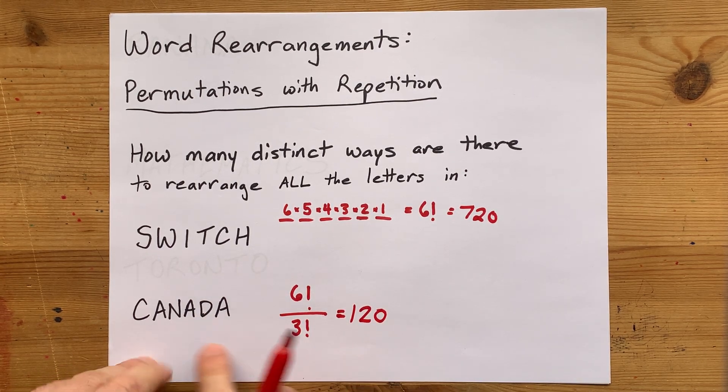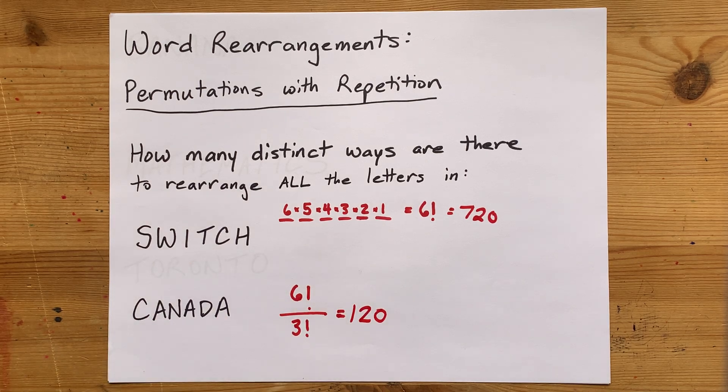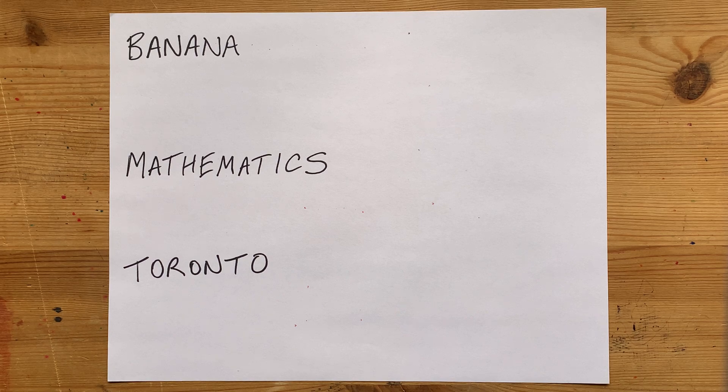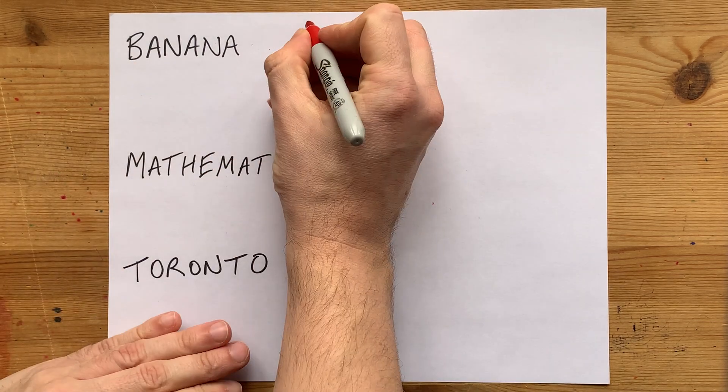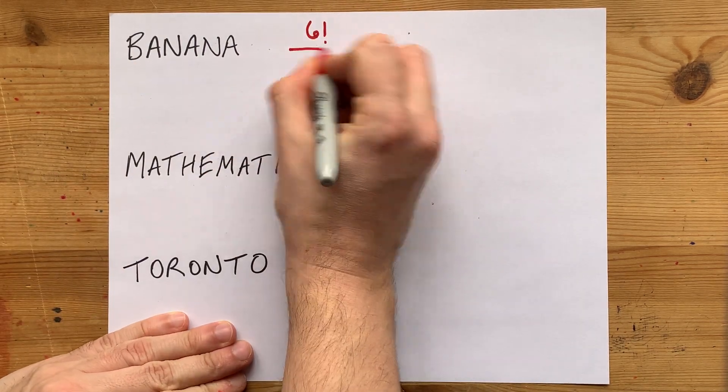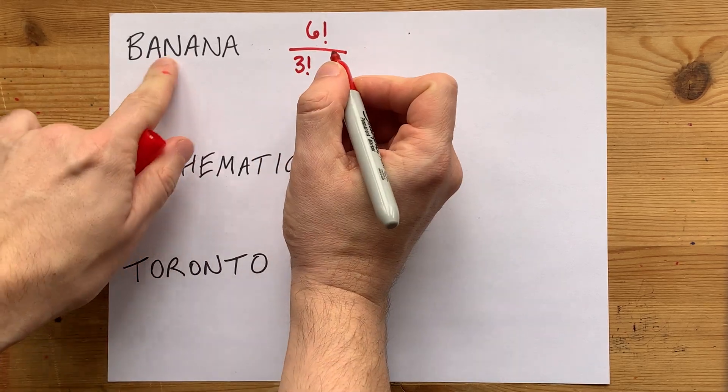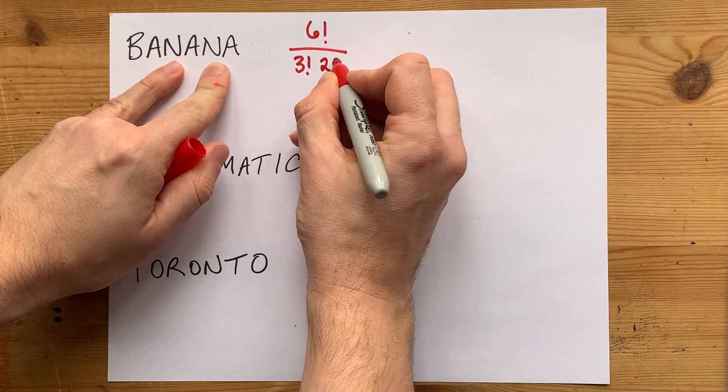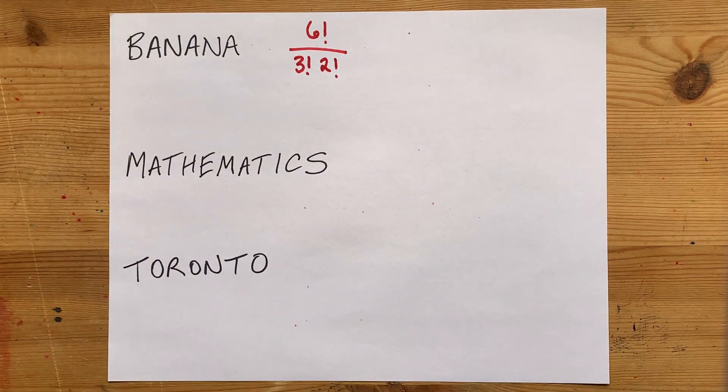I am dividing by three factorial for the three equivalent A's. Let's just practice that together. Here we have a six-letter word, six factorial, and you divide by three factorial for the three A's, but you also have double N's, so you're going to divide by another two factorial.